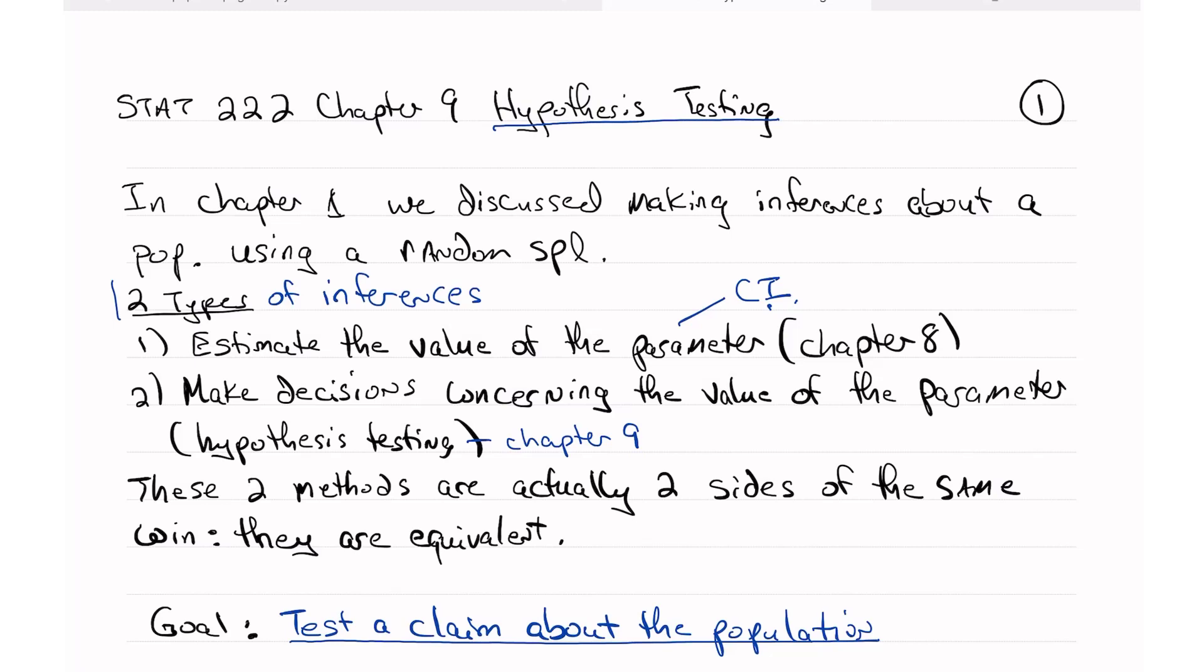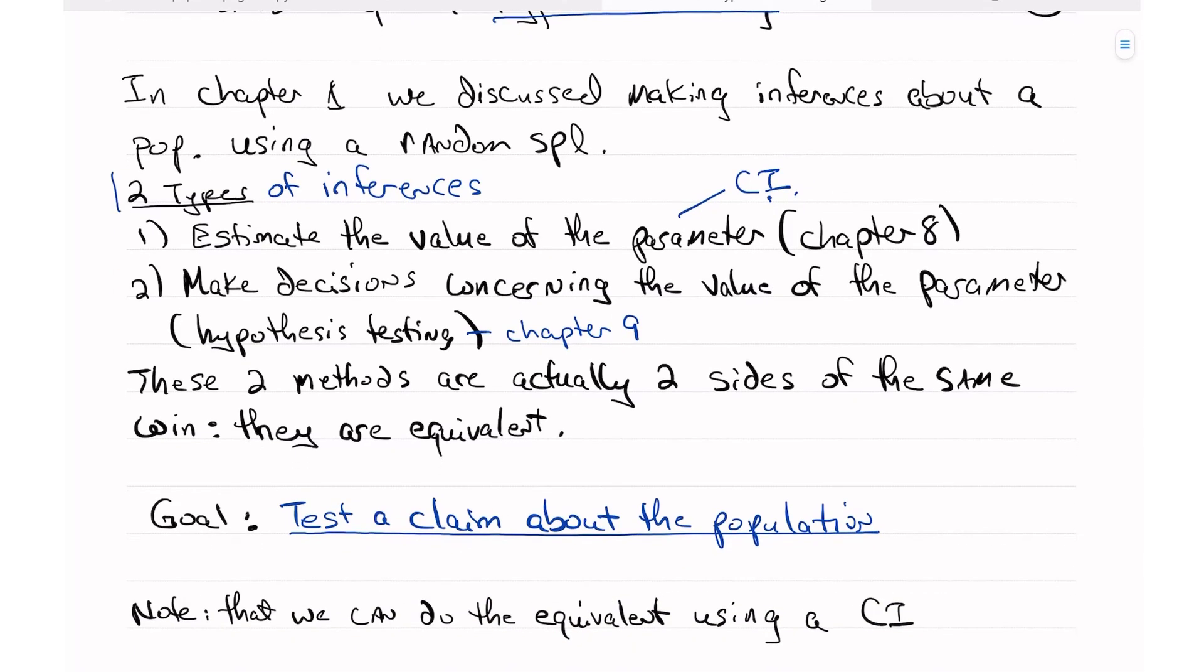So the goal is to test a claim about the population. We're going to state some claim. Now, unfortunately, statistics is a little backwards because of the nature of this, and what we're doing is based on something called decision theory, and decision theory has been around a long time, and it's very well documented and proven. But our goal is to test a claim about a population, and we're going to do that using hypothesis test, and we could do this using a confidence interval, but we would have to make some adjustments.